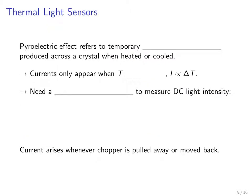Thermal light sensors dependent on the pyroelectric effect produce temporary voltages across a crystal of certain material when it's heated or cooled. This means currents only appear when the temperature of the crystal changes, and those currents are proportional to the size of the temperature change. So if we have a fixed constant DC light intensity, we're going to need something called a chopper to make continuous measurements.